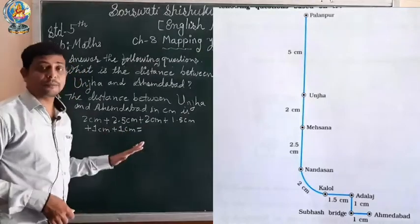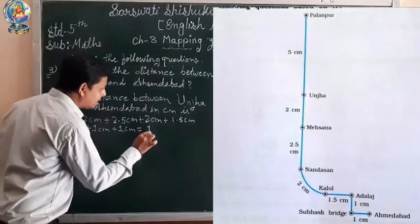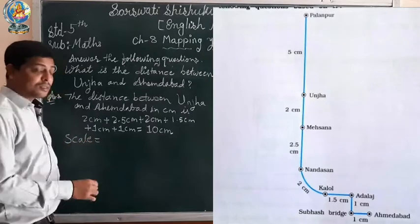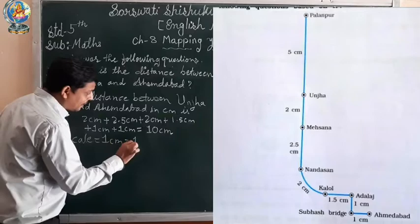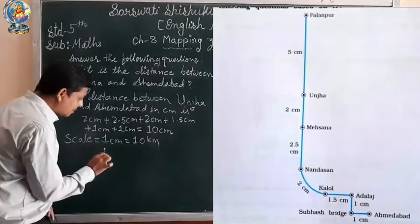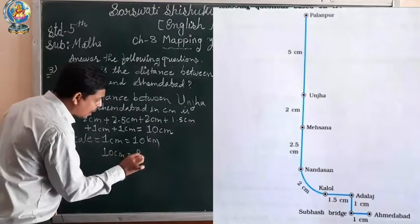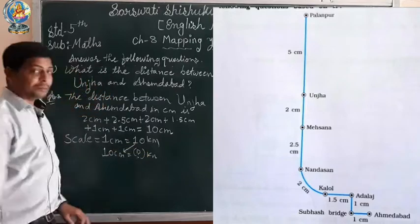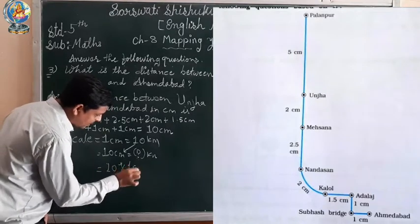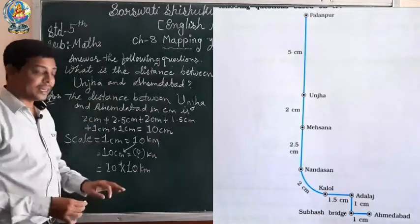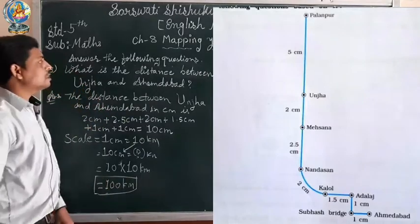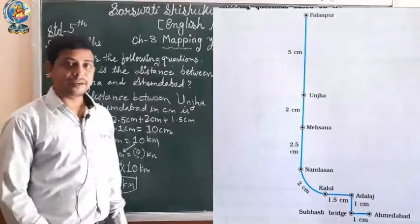If we add all the centimeters: 2 plus 2.5 plus 2 plus 1.5 plus 1 plus 1, we get 10 centimeter. Now using the scale, 1 centimeter equals 10 kilometers. For 10 centimeters: 10 multiplied by 10 equals 100 kilometers. The distance between Unja and Ahmedabad is 100 kilometers.